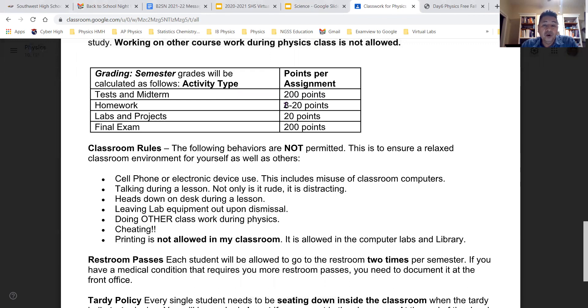Tests are worth 200 points. Homework is between 8 and 20 points, usually about 10 points. I don't like to overwhelm the students. Labs and projects are about 20 to 30 points. And then the final exam is worth 200 points.